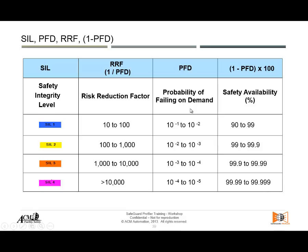IEC 61511 offers these tables, and they are also inside Safeguard Profiler. Safeguard Profiler uses this table to discriminate and give you an indication of how much risk there is — in the same way the risk graph tells you how much risk is there. If there is a gap, it will tell you there is a gap equivalent to a SIL 1 gap. This is useful for people accustomed to working in SIL verification.